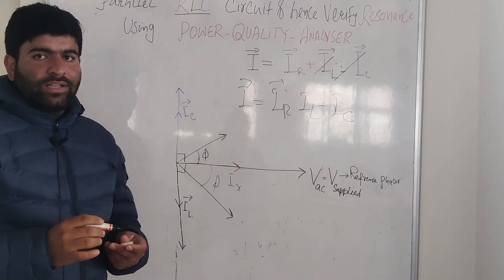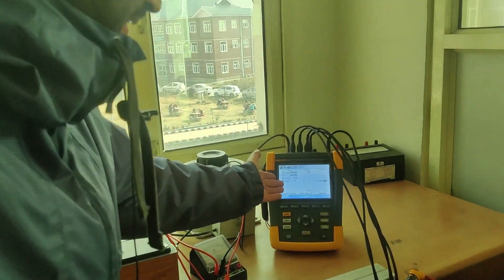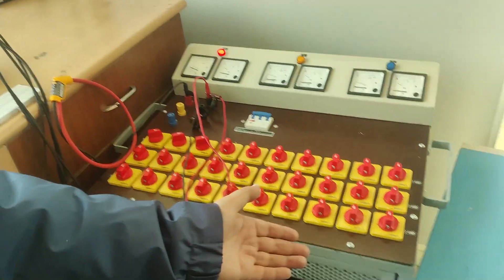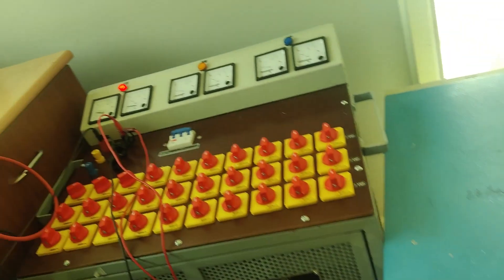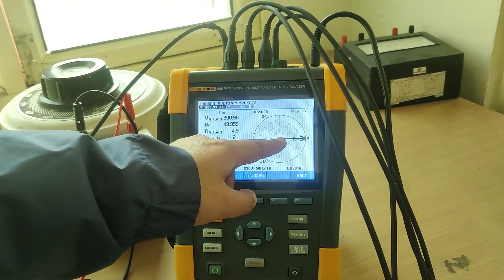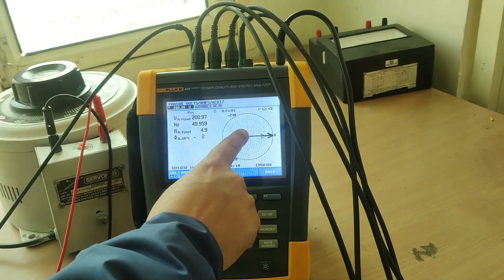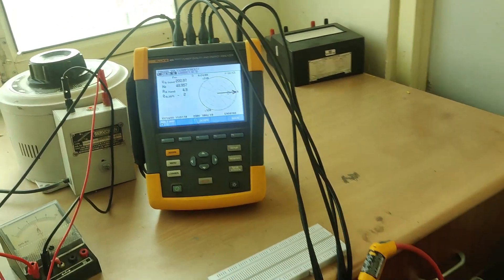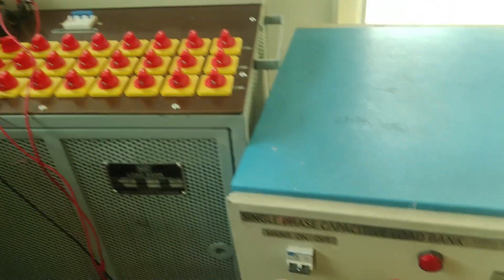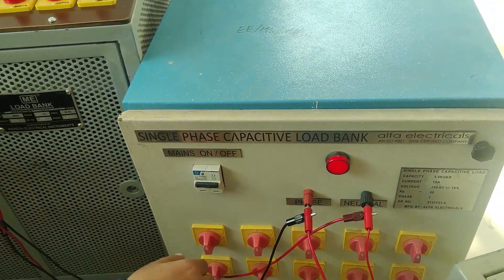This is our experimental setup. You can see the power quality analyzer, the watt meter, the resistor load bank, the capacitor load bank, and the inductive load bank. We have connected only the resistive load bank first. As you can see on the display, the voltage and current are in phase — the larger line is the voltage and the shorter one is the current. Now I will connect and switch on the capacitive load.